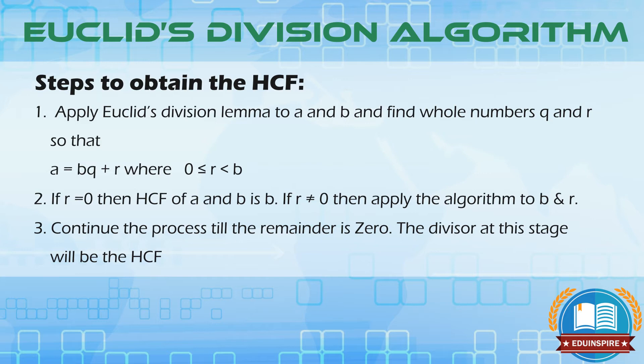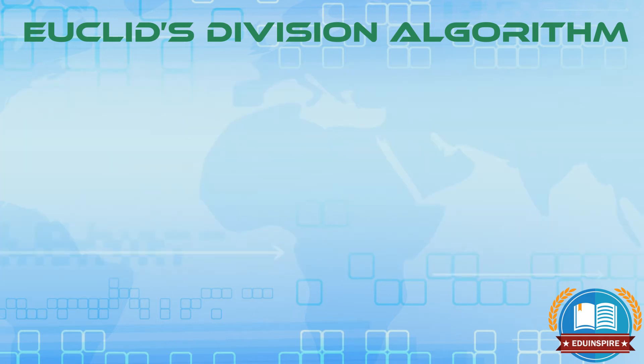Continue the process till the remainder is zero. The divisor at this stage will be the HCF, that is the highest common factor. Now let's go through a few examples to understand this algorithm.